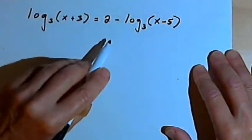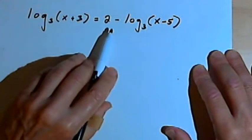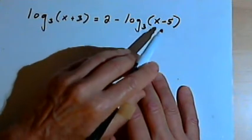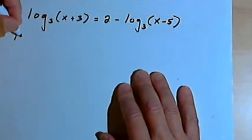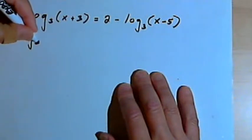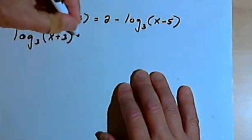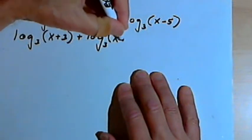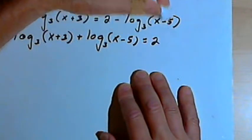So the first step is going to be to move all of the logs to one side of the equation, and keep the constant on the other side. So I'm going to add log base 3 of x minus 5 to both sides. That means the left side of the equation is going to be the log base 3 of x plus 3 plus the log base 3 of x minus 5. And that's going to equal 2.